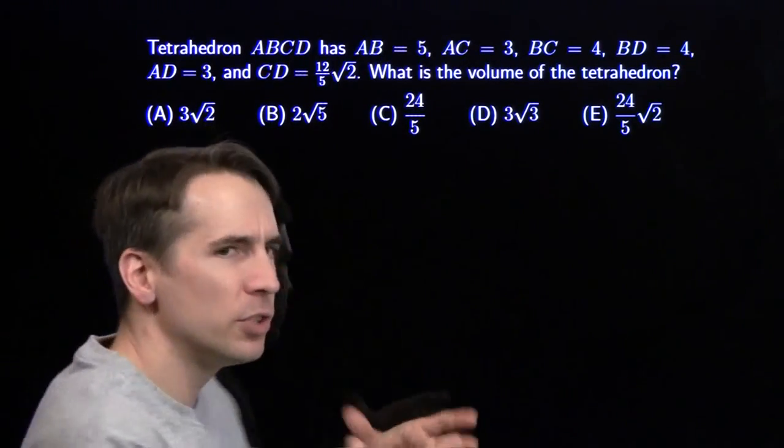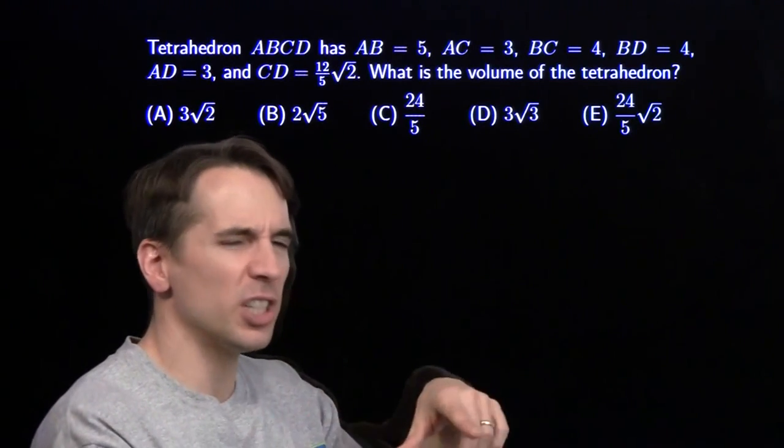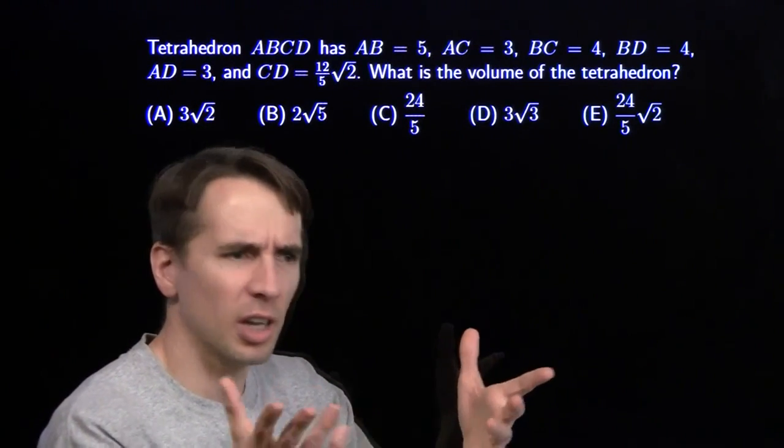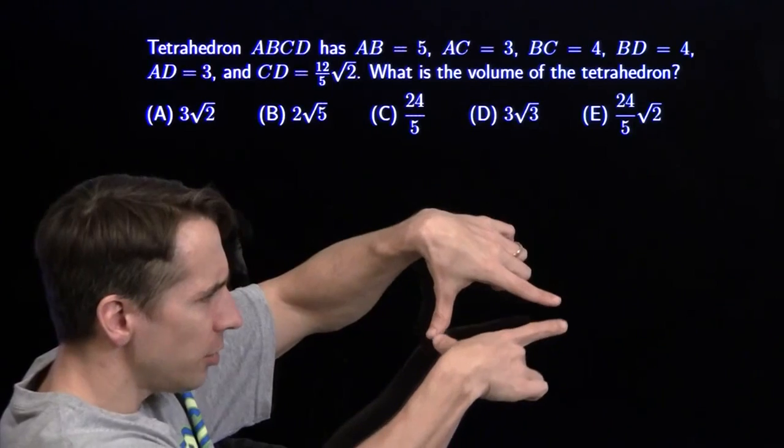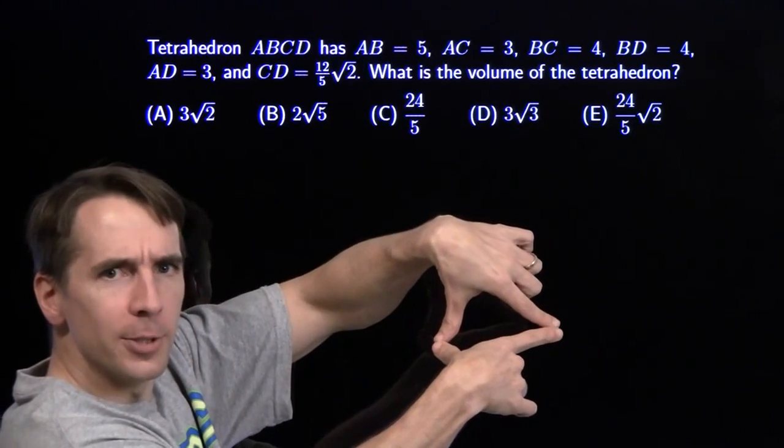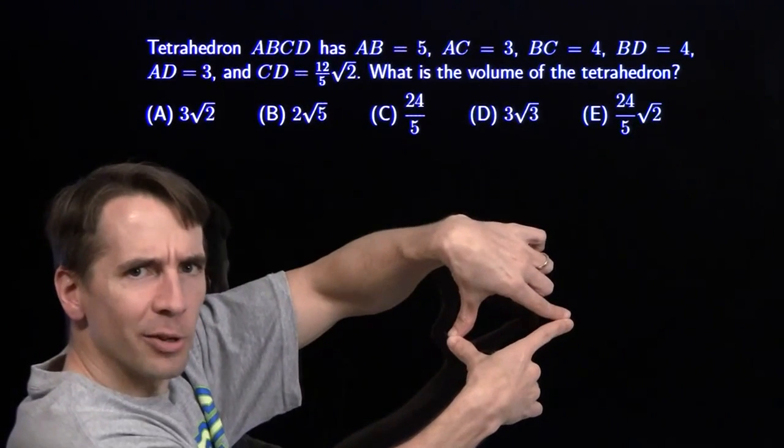So in our tetrahedron, we have two faces that are congruent 3, 4, 5 right triangles that share hypotenuse. Visualize you've got a right triangle, another right triangle, and they're sharing this hypotenuse in here, and that's not really helping very much.